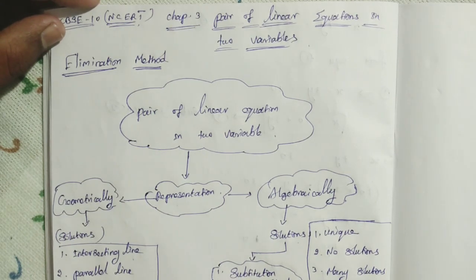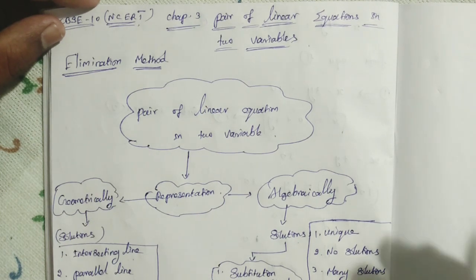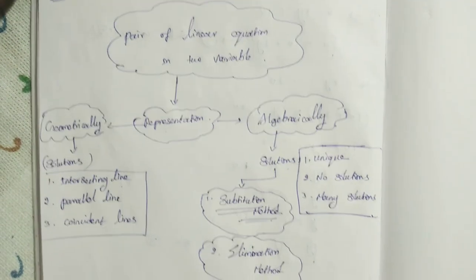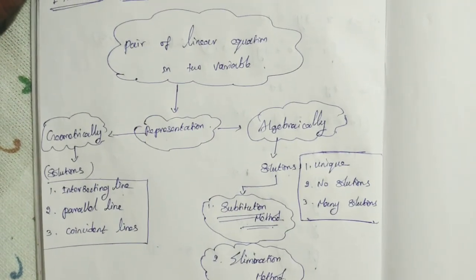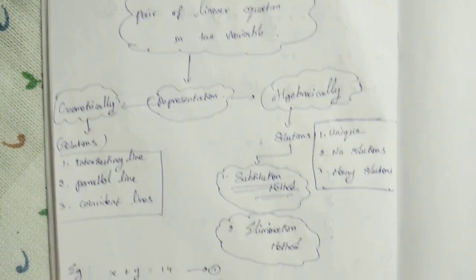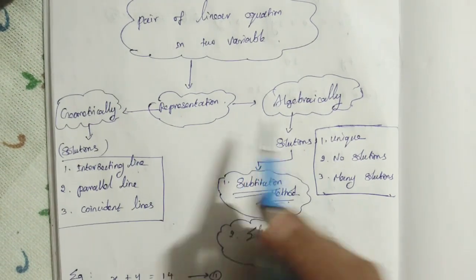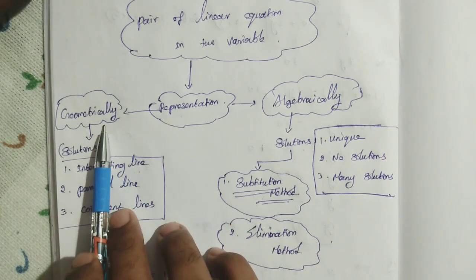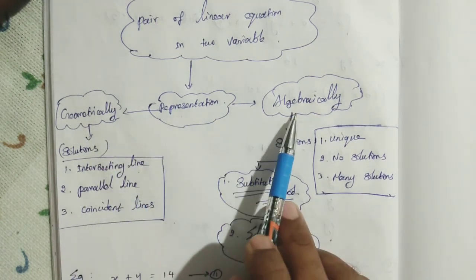Before we enter the elimination method, I just want to recall a few things we saw before the elimination method in Chapter 3. The first one is a pair of linear equations — we know what is the meaning of a pair of linear equations. Then we represented the pair of linear equations geometrically as well as algebraically.